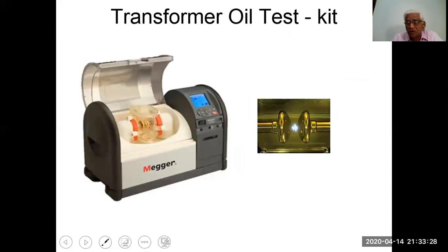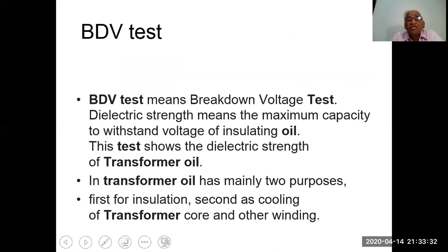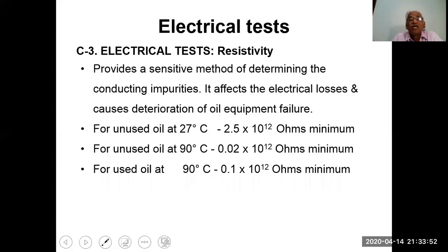The BDV (Breakdown Voltage) test measures the maximum capacity of insulating oil to withstand voltage — the dielectric strength of transformer oil. Transformer oil has two main purposes: insulation and cooling of transformer core and winding parts. For resistivity, it provides a sensitive method of determining conducting impurities, affecting electrical losses and causing deterioration. For used oil at 27°C: minimum 2.5×10¹² ohm-m. For unused oil at 90°C: minimum 0.02×10¹² ohm-m. For used oil at 90°C: minimum 0.1×10¹² ohm-m.